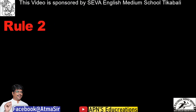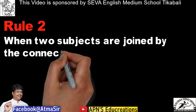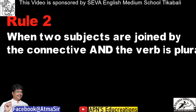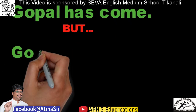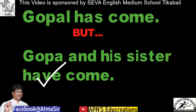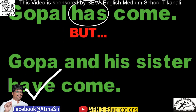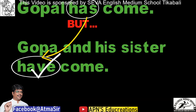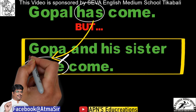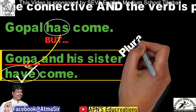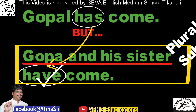Rule number two: when two subjects are joined by the connective 'and,' the verb is plural. We say 'Gopal has come,' but we say 'Gopal and his sister have come.' We use 'have' — the plural form of 'has' — because in this sentence the subject 'Gopal and his sister' becomes a plural subject. That's why we used 'have' and not 'has' in this case.